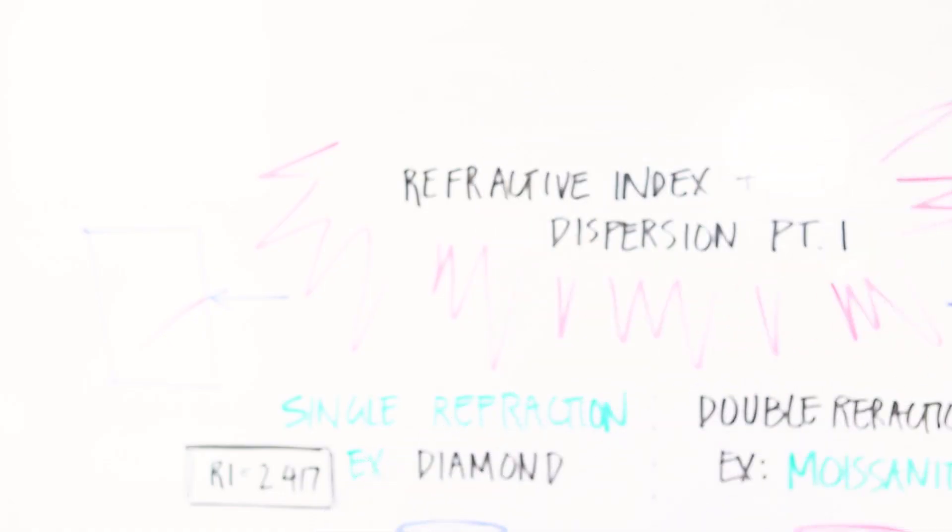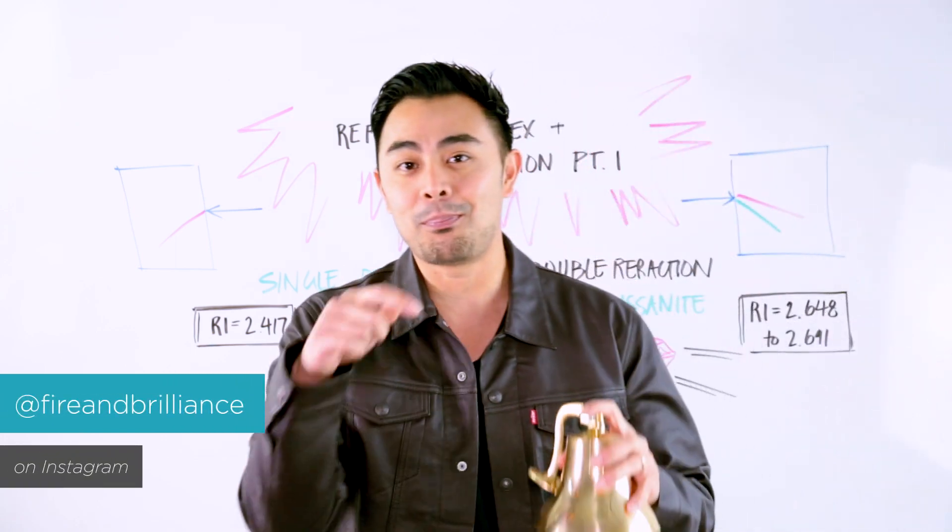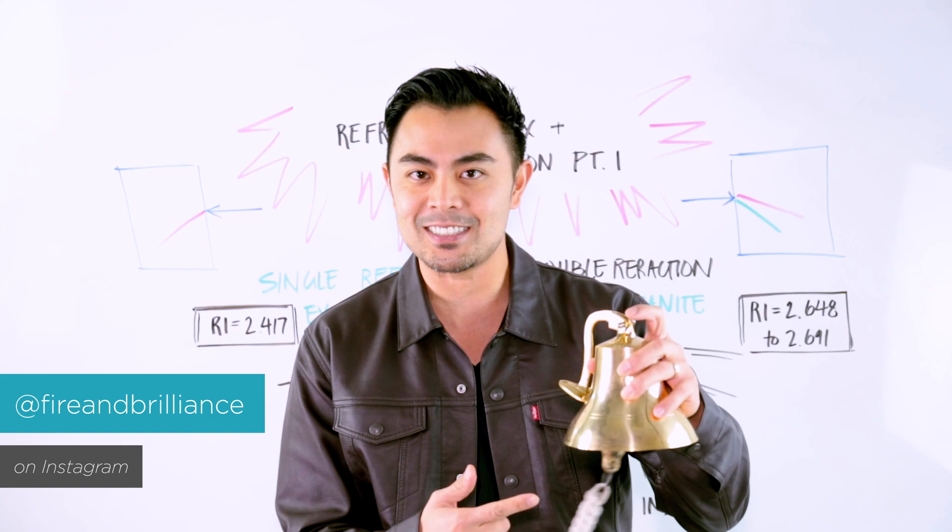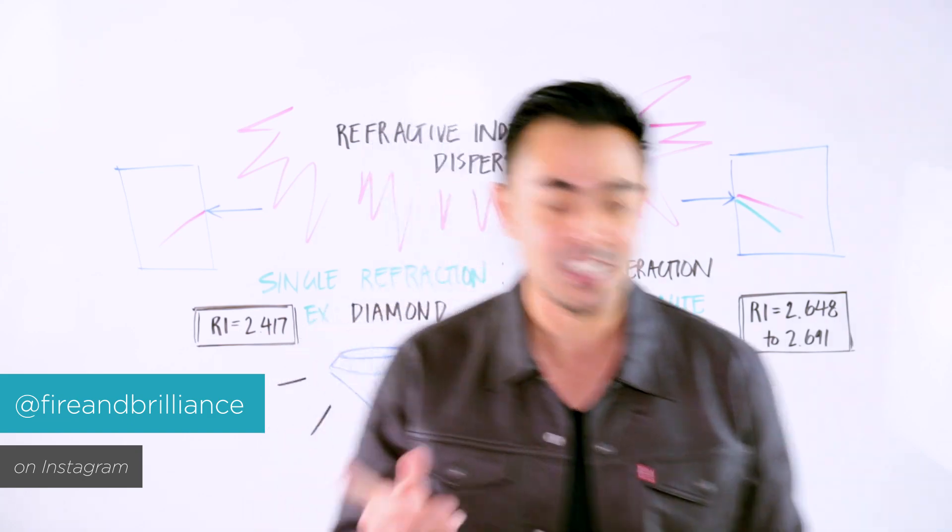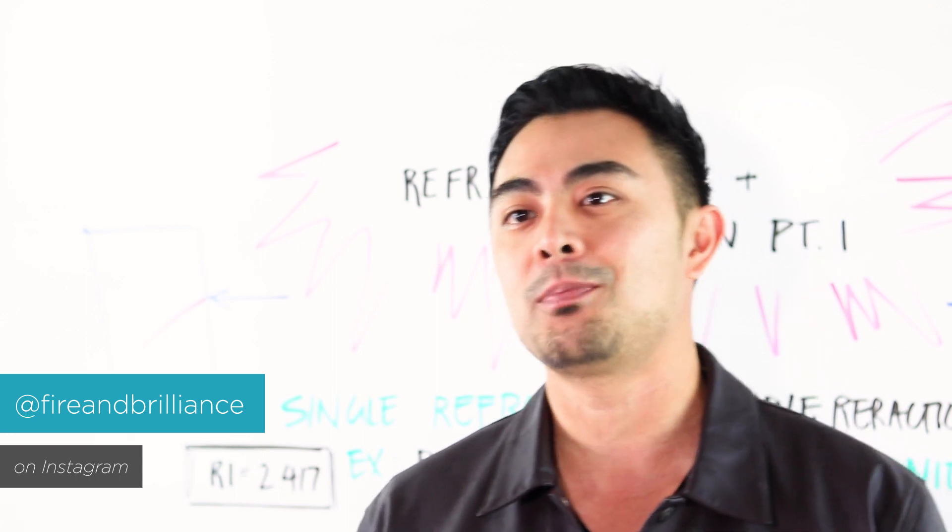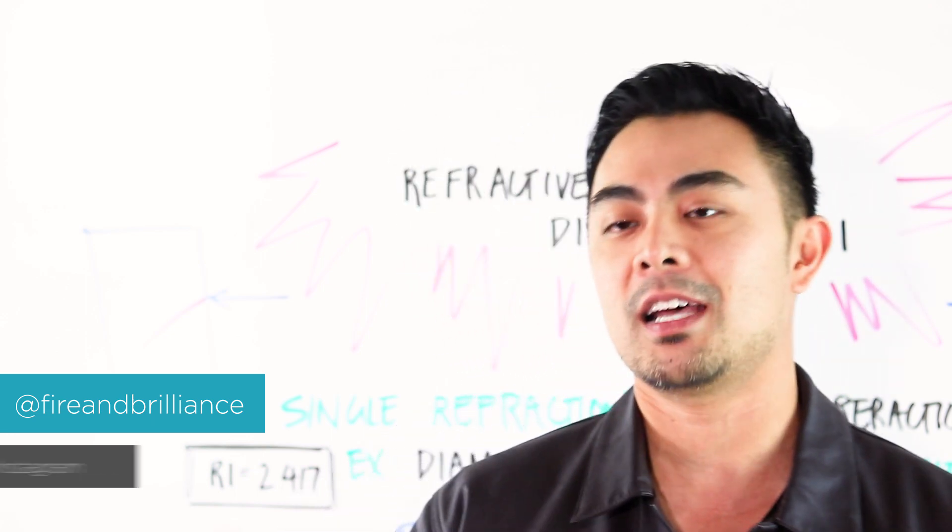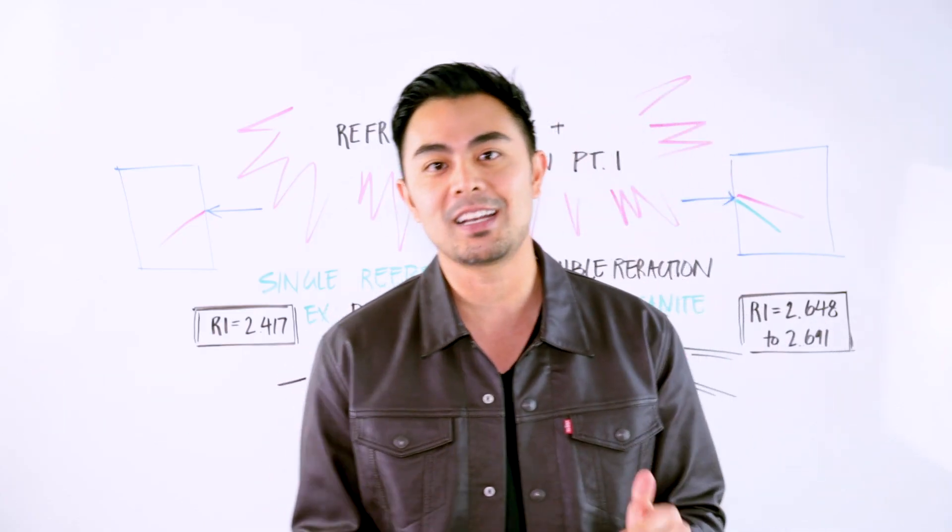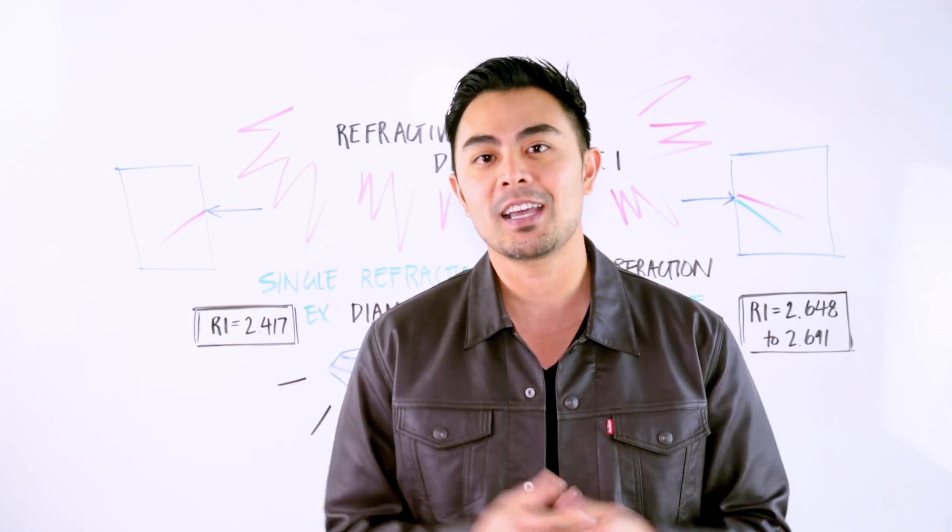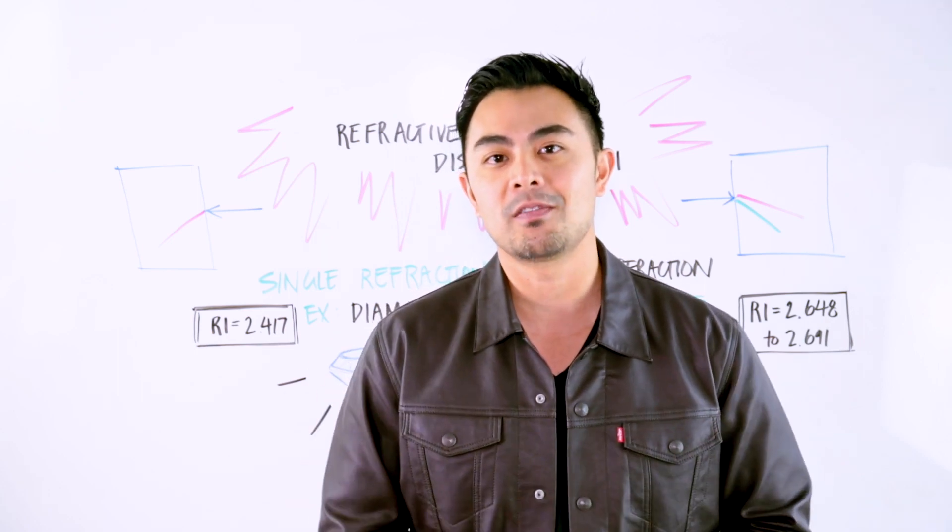So with that being said, we do have a notification bell at the bottom of YouTube. Just go ahead and click on it. Obviously, it doesn't look like this. It kind of looks like this, but if you click on that, every time a new video will show, it will pop up and it will notify you on your phone, on your desktop, or what have you. So with that being said, thank you so much again for subscribing to the channel. Tune in next time for part two of this two-part series.